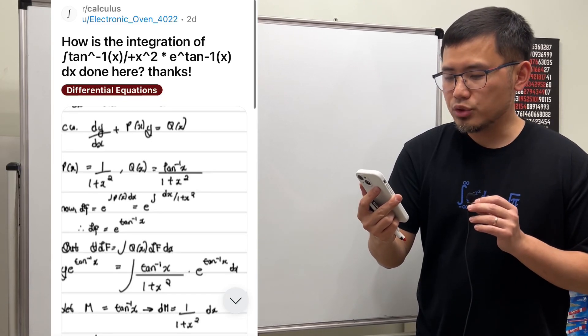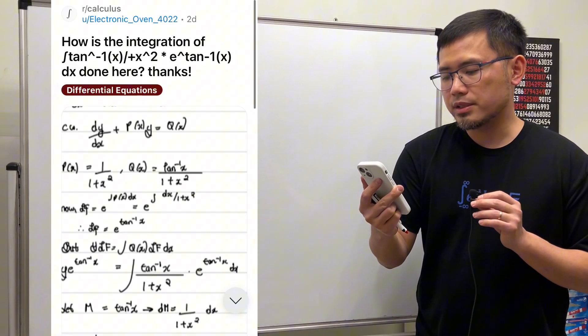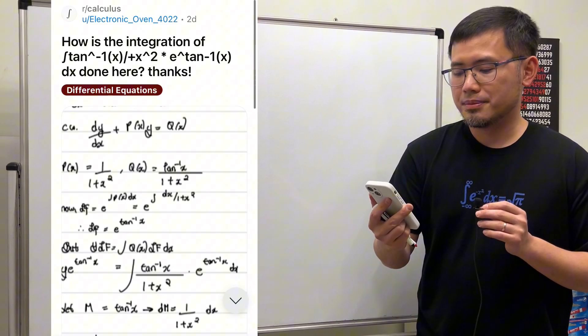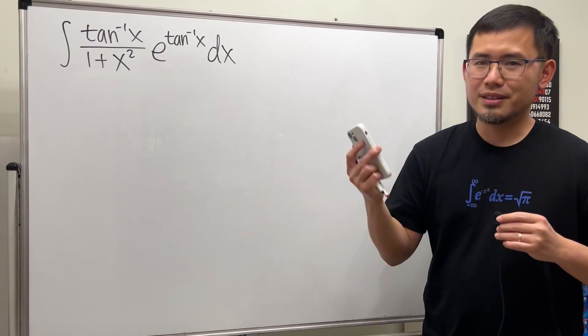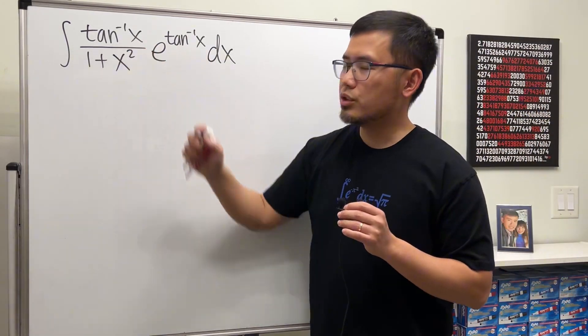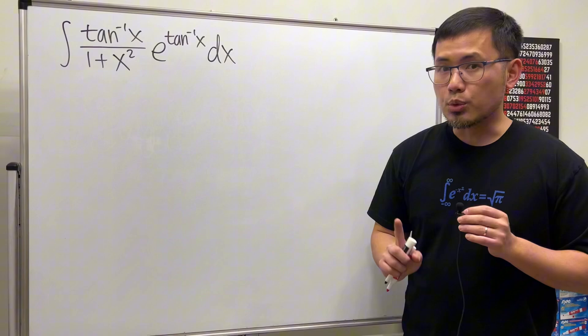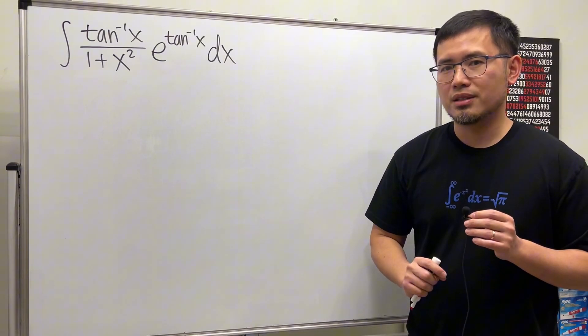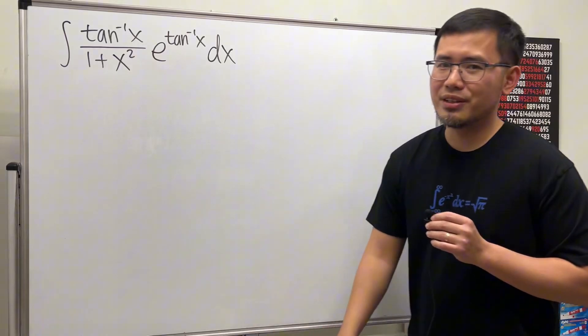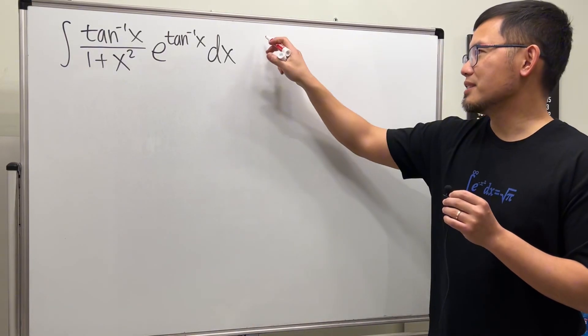How is the integration of inverse tangent of x over 1 plus x squared times e to the inverse tangent of x done here? Okay, let's have a look. So right here, as you can see, we have inverse tangent of x right there and right there, and the derivative of inverse tangent of x is 1 over 1 plus x squared.